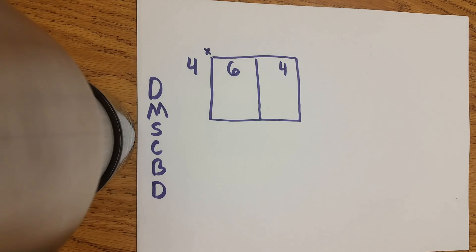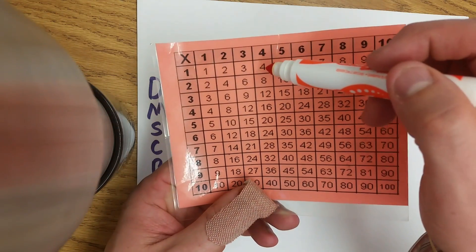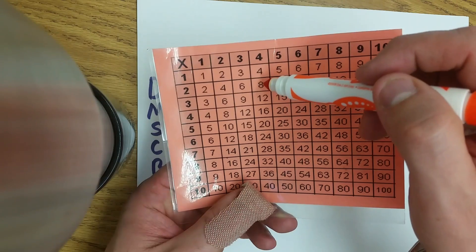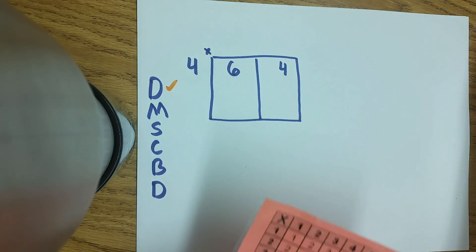So our first question is D: Divide. How many 4's can fit inside of 6? So use your 4's. 1 four fits. 2 fours is 8. That's too big. So we can't have 2 fours. We can only have 1.